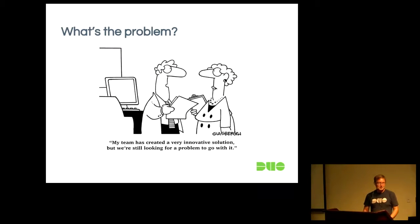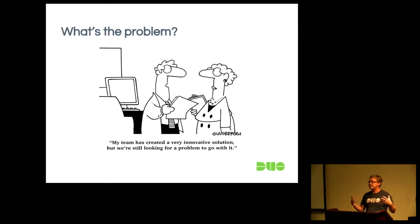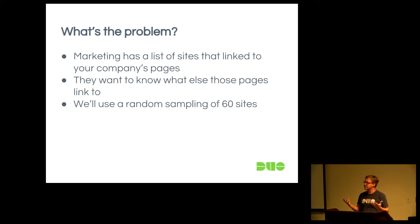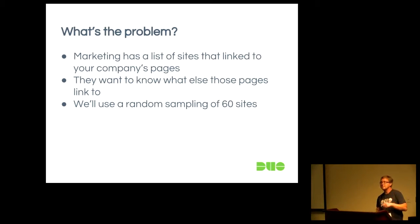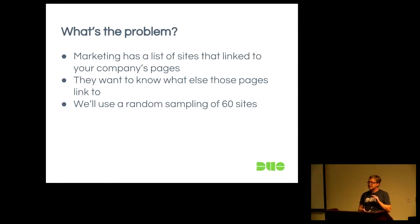Let's think of a problem that could be realistic, and put ourselves into the role of somebody who does some IT and has some Python familiarity. The problem is that marketing comes to us and says our logs have all these referral URLs — places that link to us — and they'd really like to know where else those places link to. Can you write something that visits those URLs, finds all the links, then visits those pages and gets their titles? We're going to use a small sampling of about 60 sites.